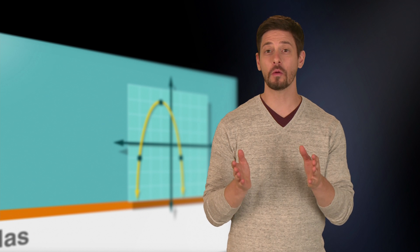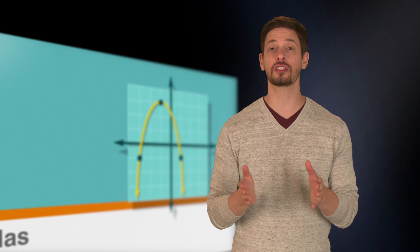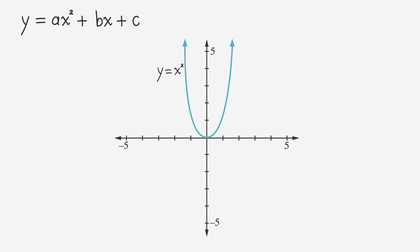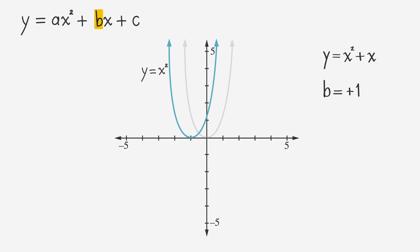Now let's look at how the coefficient b affects the parabola. The value of b shifts the parabola to the left or right. In the equation y equals x squared minus x, b, the coefficient of x, is negative 1. Because the coefficient of x is negative, the parabola is shifted to the right. And if b is positive, the parabola will be shifted to the left.